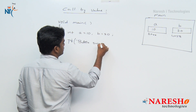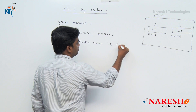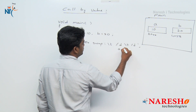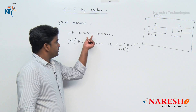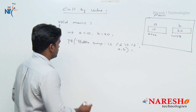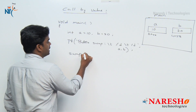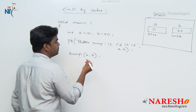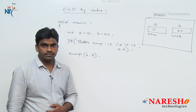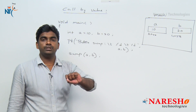Before swapping, I am printing a value and b value. Next, we are calling the swap function, passing a and b — that is, passing values. Call by value means calling a function by passing the value as a parameter.